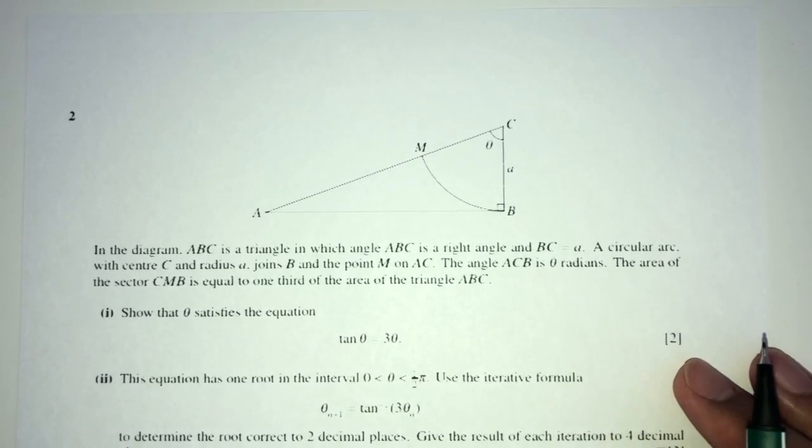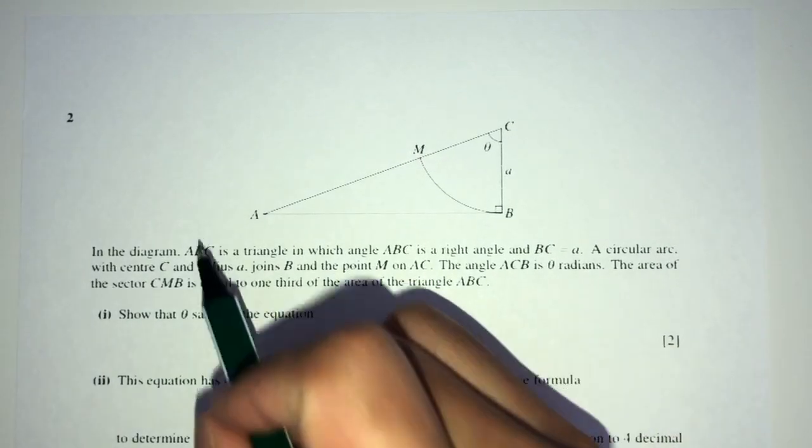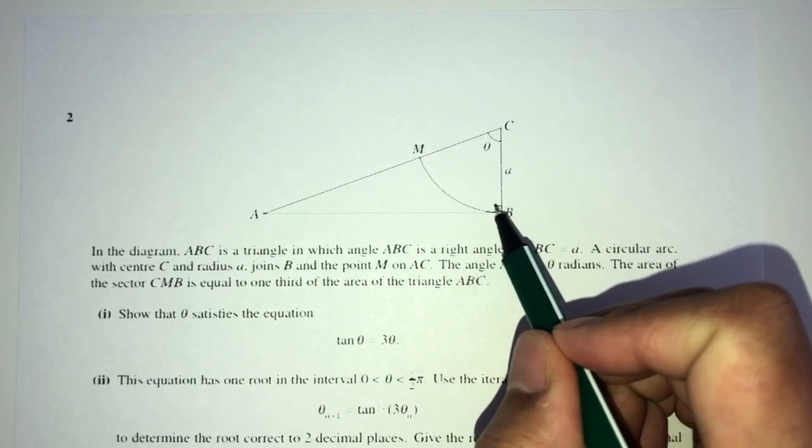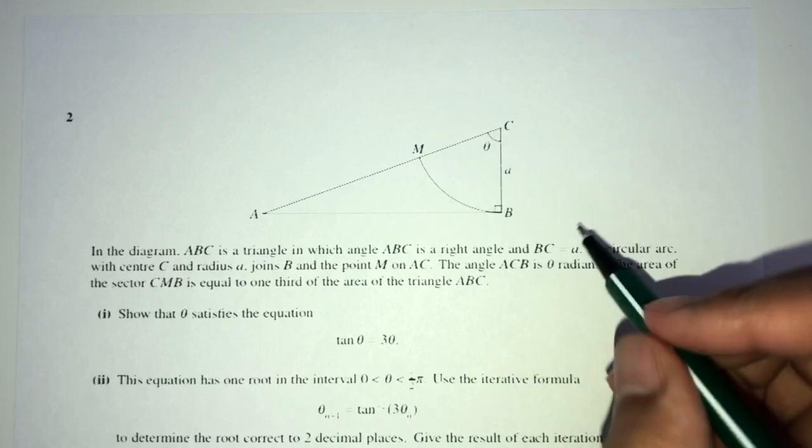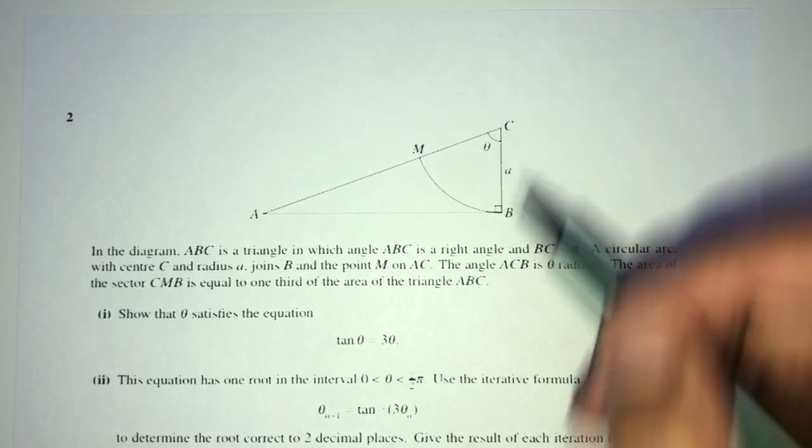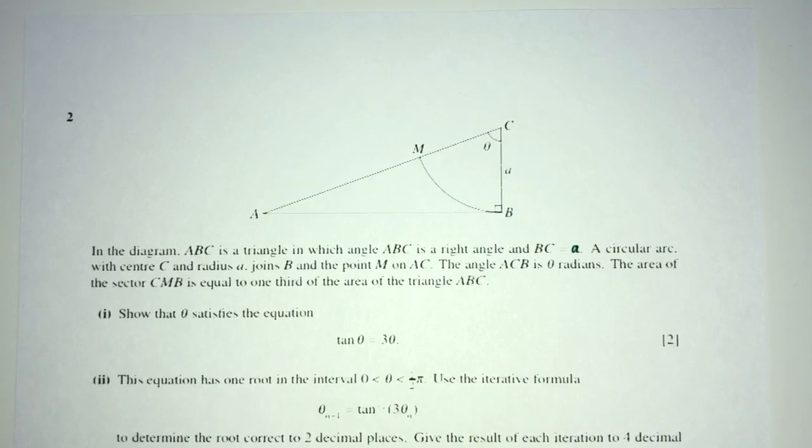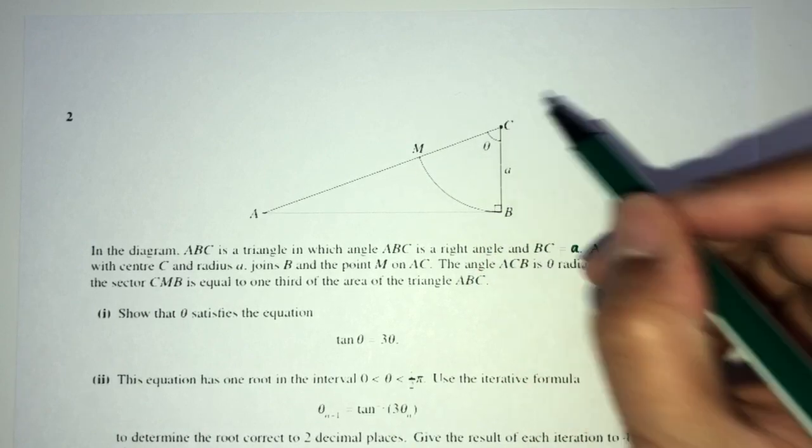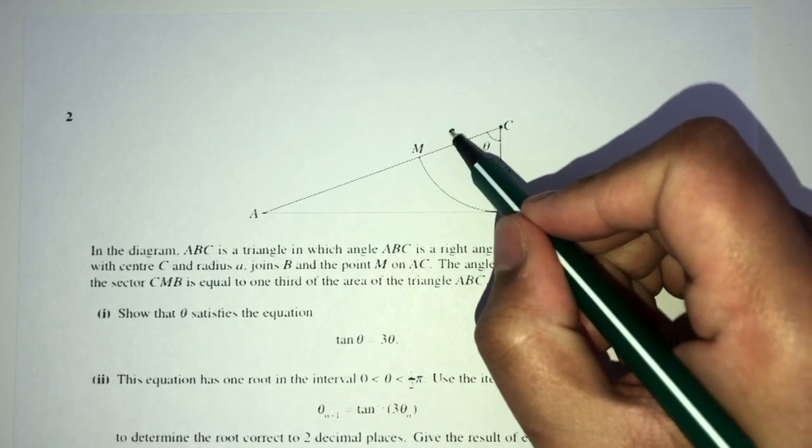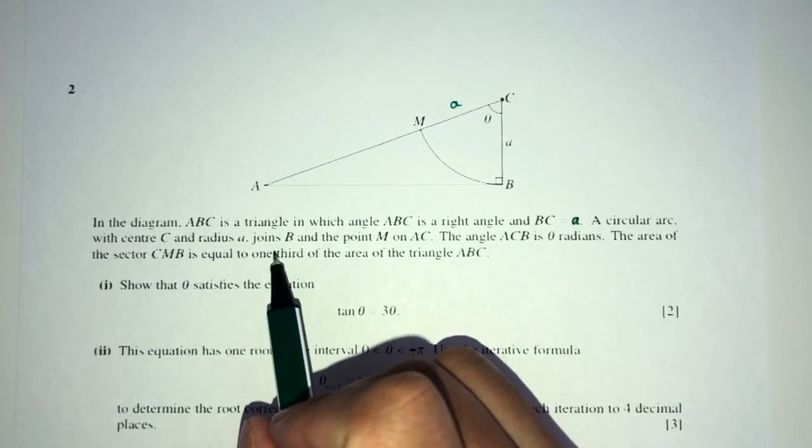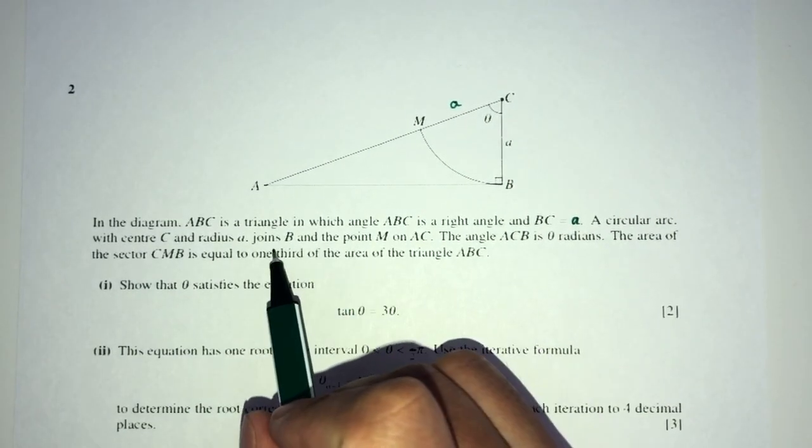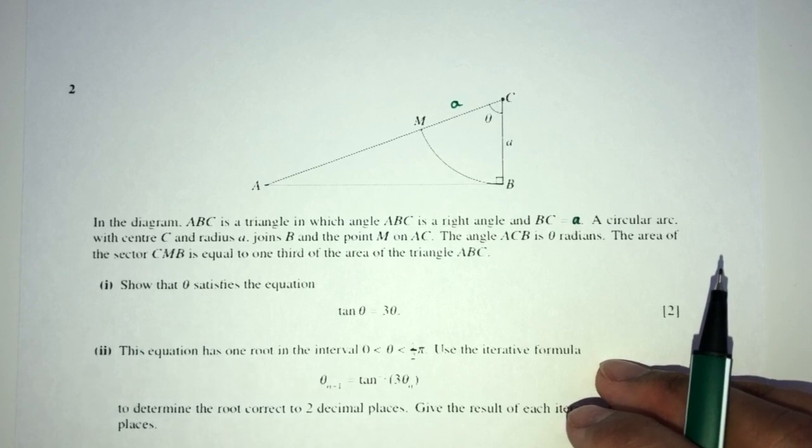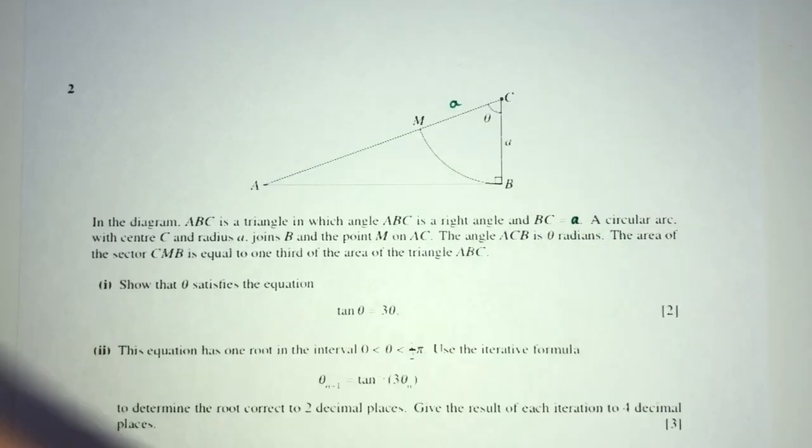Now let's move on to question number two. So in this diagram, ABC is a triangle, in which the angle ABC is a right angle. So here we have right angle triangle, and BC is equal to the value of A, so A is BC. Now, the circular arc with center C, so here we have an arc with the center C, and the radius is A, so this is A as well. Now, joins B and the point M on AC. Again, this is just basically telling you what we can see on the diagram already.